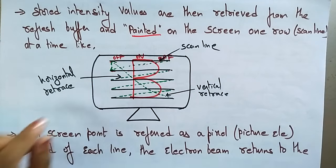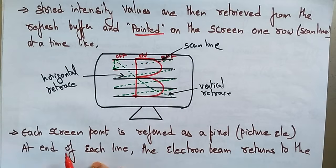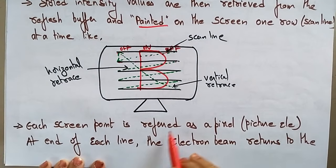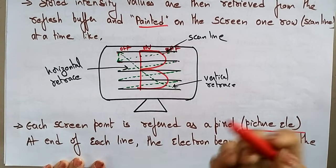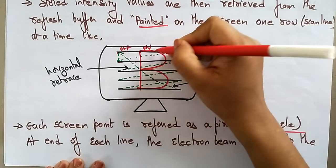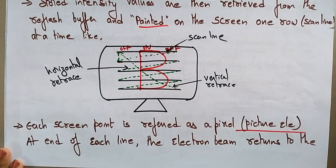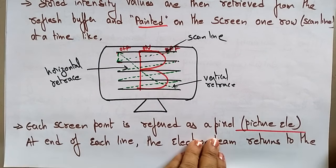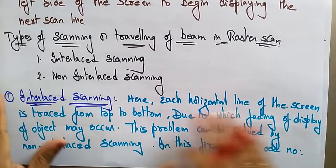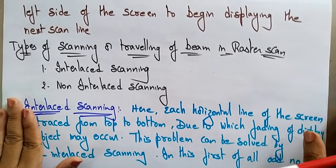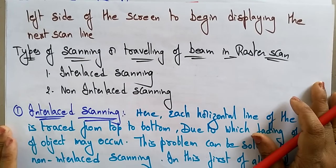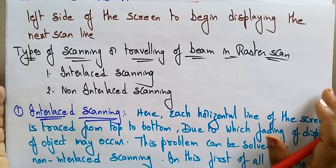Each screen point is referred to as a pixel. At the end of each scan line, the electron beam returns to the left side of the screen to begin displaying the next scan line.